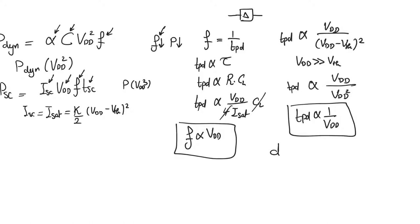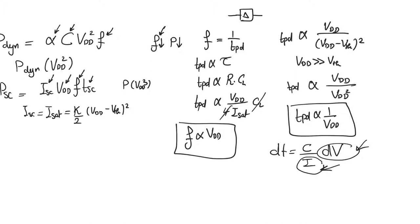From the IV equation of the capacitor, delay is equal to C over I times delta V. So it's proportional to the amount of voltage we need to switch and inversely proportional to the current doing the switching. When we increase the supply voltage, we increase delta V — the amount of switching — linearly, but we increase the available current quadratically, which is why delay will decrease. So increasing power supply is going to decrease delay, and this is a well-known fact.